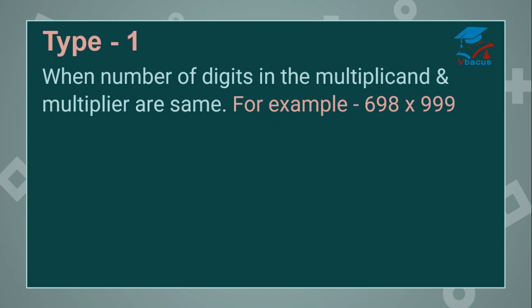For example, 698 times 999. In both the numbers the digits are same — multiplicand and multiplier both are having three digits. So let us see how we multiply 698 by 999. You have to write in two parts. Part 1 is write the predecessor of the multiplicand, that is 698, and the predecessor of 698 will be 697.